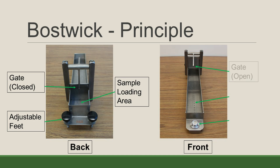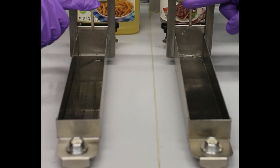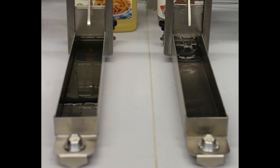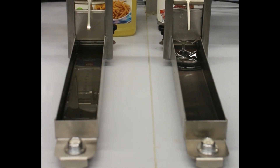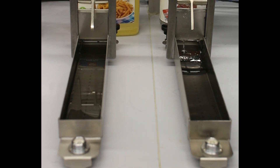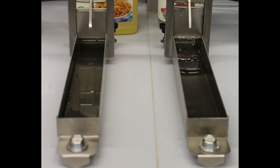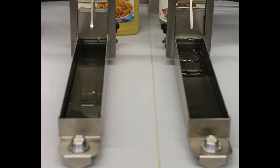In the front you have the gate now open in this picture, and the flow canal which is graduated or has markings to determine how far the fluid flowed. And in the very front is a level to help set the slope. In our example we compared canola oil on the left and corn syrup on the right. As you can see, samples that are fluid-like but with higher viscosity like corn syrup or ketchup work better with the Boswick.